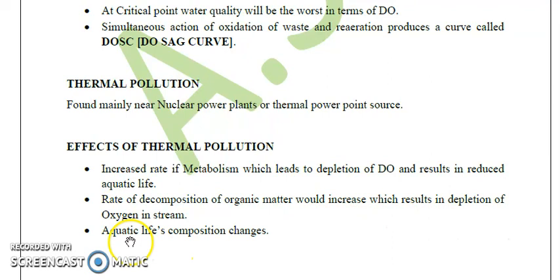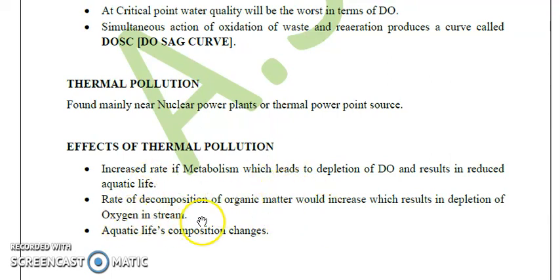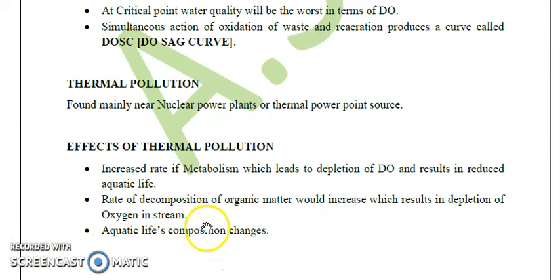The second effect is that the rate of decomposition of organic matter also increases with temperature. This causes a higher demand for oxygen, which results in depletion of oxygen in the stream. With increasing temperature, the rate of decomposition of organic matter increases, demanding more oxygen and causing oxygen depletion.